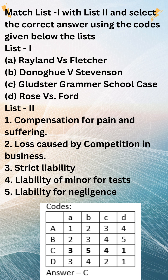The House of Lords found in favour of Mrs. Donoghue and awarded her damages. The case established the principle that manufacturers owe a duty of care to the ultimate consumers of their products, even if they do not know who those consumers are. Donoghue v. Stevenson is one of the most important cases in the history of negligence law. It has been cited and applied in countless cases over the years and has helped to shape the law of negligence in common law jurisdictions around the world.